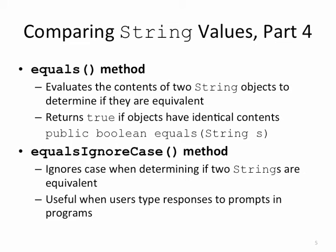Instead, the string class provides some methods that we could use to compare string objects. The equals method will take a look at two strings and compare to see if they have the same contents, identical contents. If the contents are identical, it will return true. If they are not, it will return false.